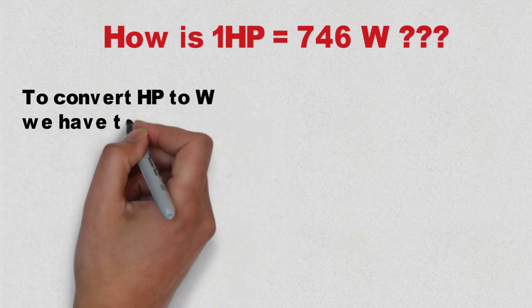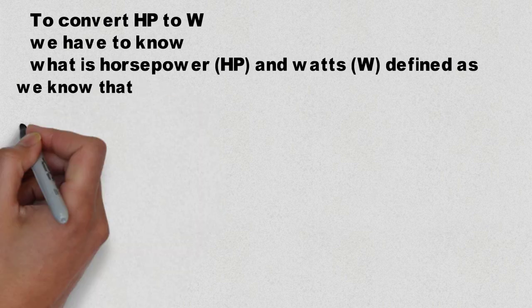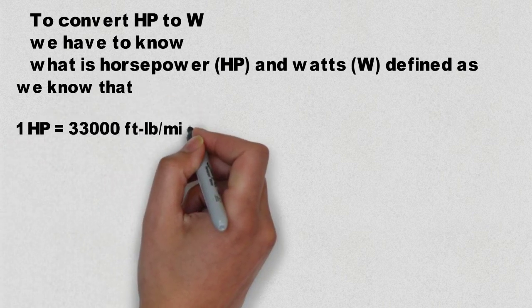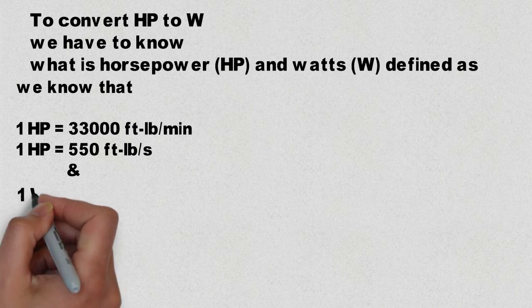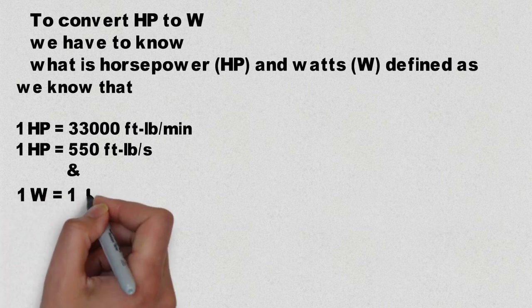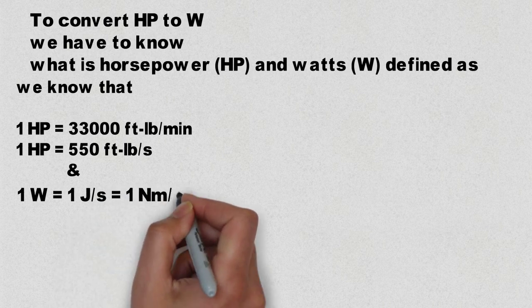But before we have to know what is horsepower and watts. So basically as per definition, one horsepower is equal to 33,000 foot-pound per minute, and if we convert it in terms of seconds we get 550 foot-pound per second. And one watt is equal to one joule per second.